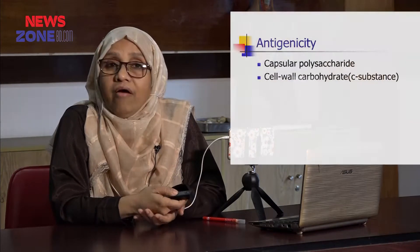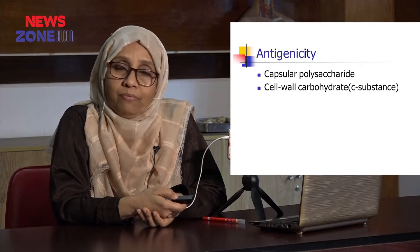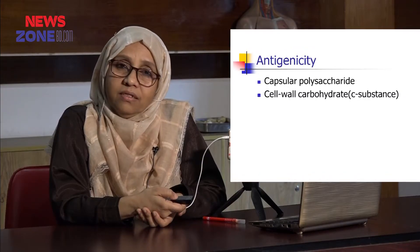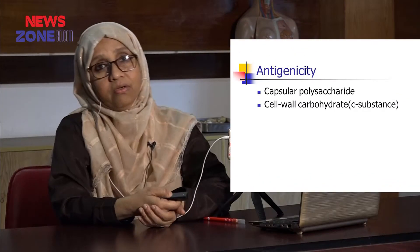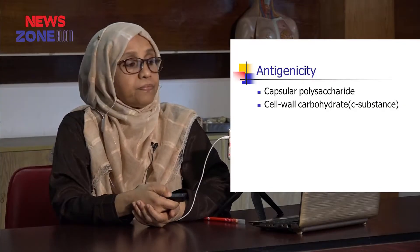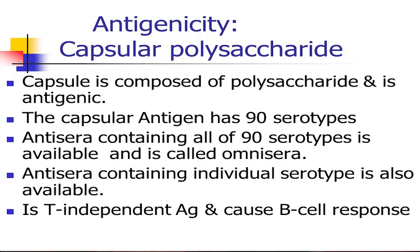They have two important antigens: one is the capsular polysaccharide and the other is the C-wall carbohydrate in the cell wall. The antigenicity of the polysaccharide is very important because they are classified into 90 serotypes, depending on the capsular polysaccharide.